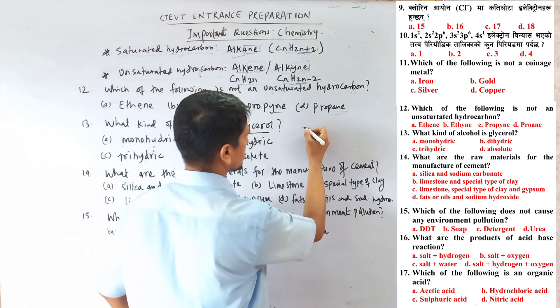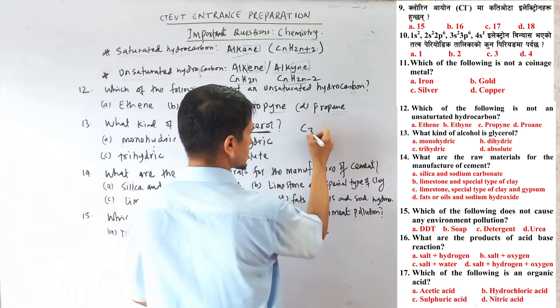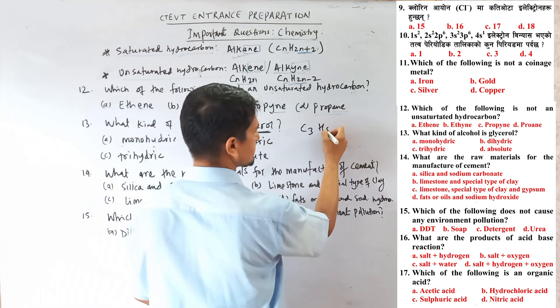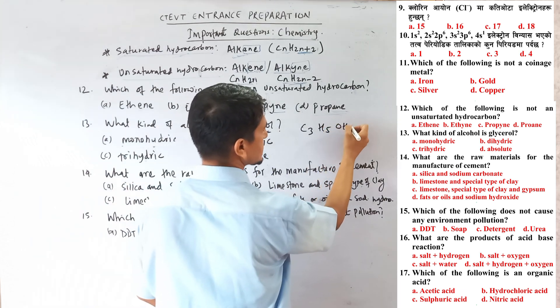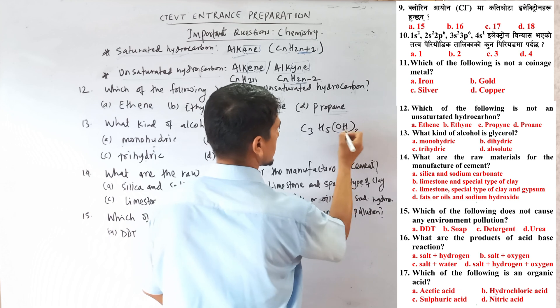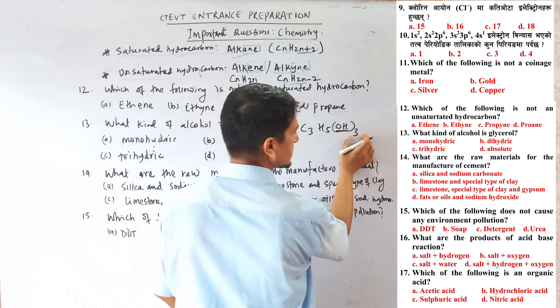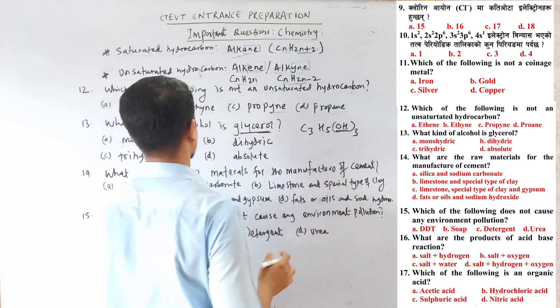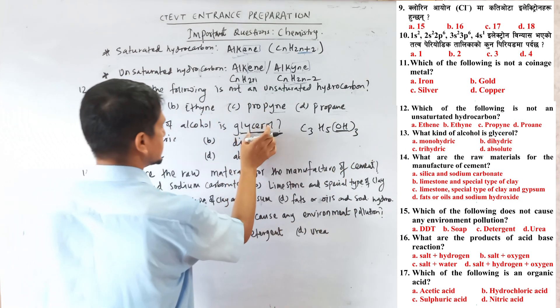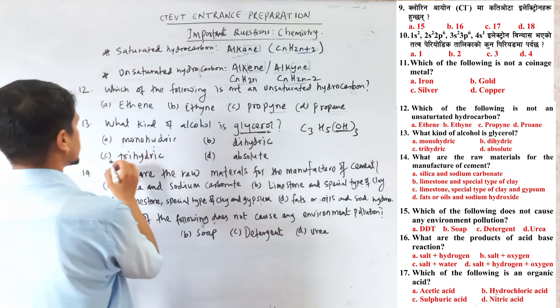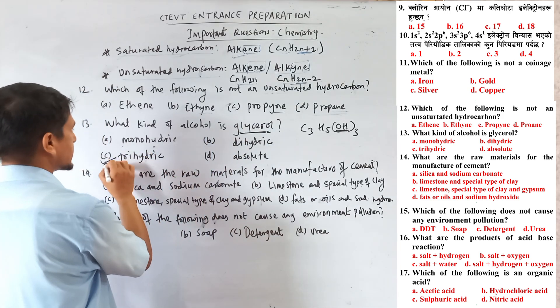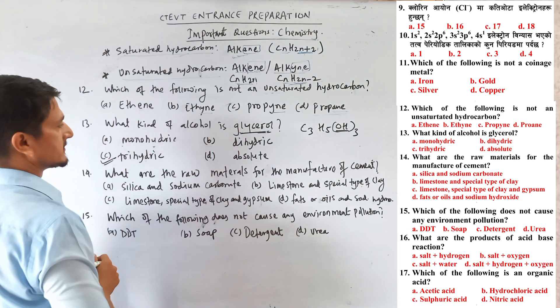Question number 13: Glycerol has the chemical formula C3H5(OH)3. It has three OH groups, so glycerol is a trihydric alcohol.